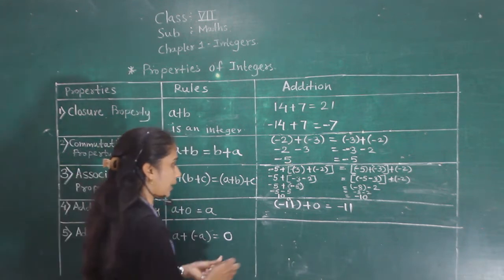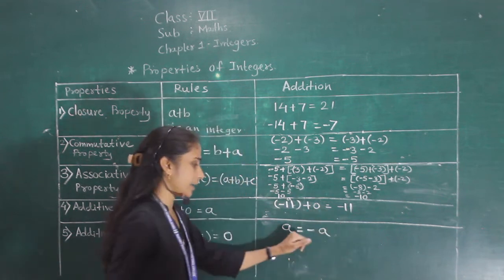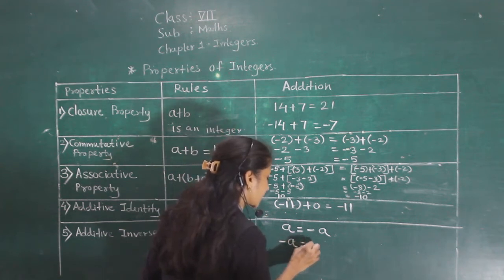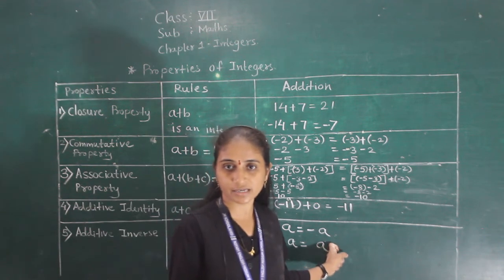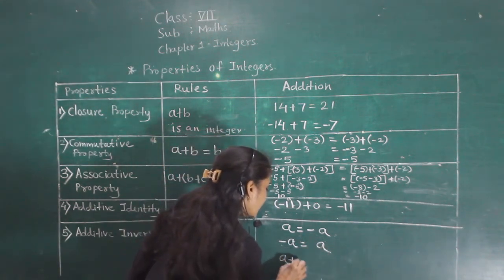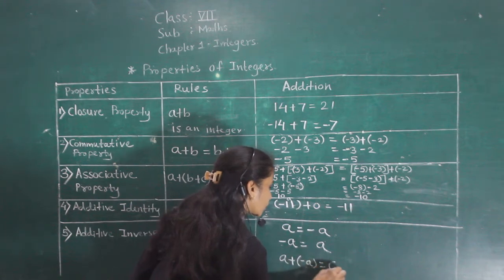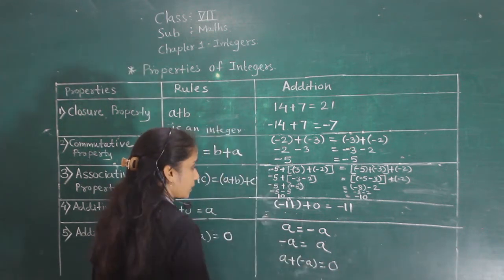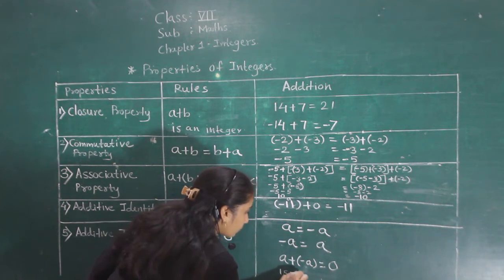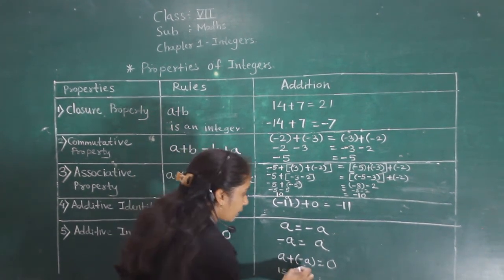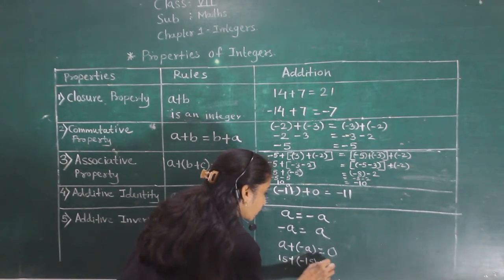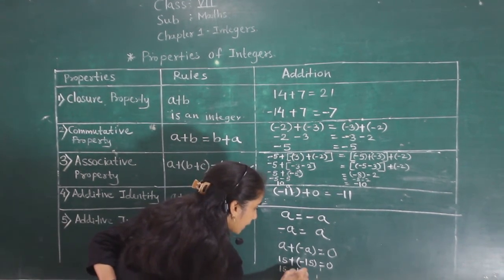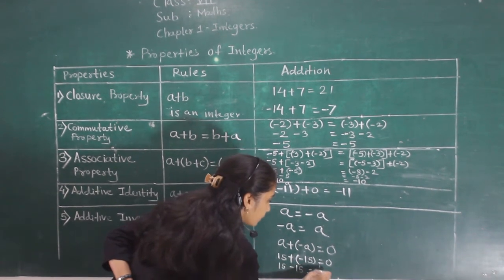The additive inverse of A is minus A, and the additive inverse of minus A is A. So A plus minus A is equal to 0. For example, 15 plus minus 15 is equal to 0.